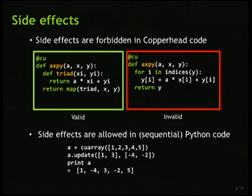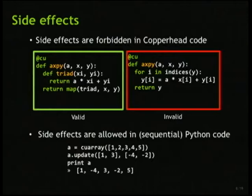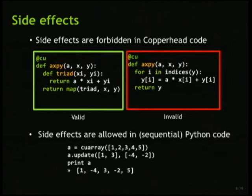We forbid side effects in Copperhead code, so we don't have loop structures. On the left is a valid implementation of the SAXPY example where we're calling map, and we're giving it a function that will perform element-wise computation. On the right is the way it's defined in C in the BLAS library, where you actually overwrite one of your inputs and have a loop over the indices. That would be invalid because our compiler would need to disambiguate everything and figure out if this could actually be parallelized — depending on what kind of dependencies you have in your loops, it may not actually be possible without changing the semantics. So we just don't allow side effects.